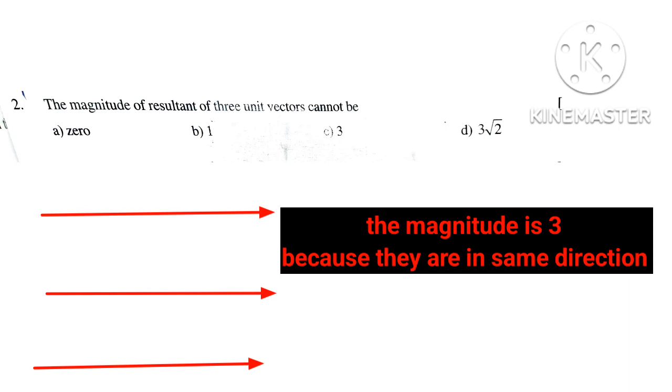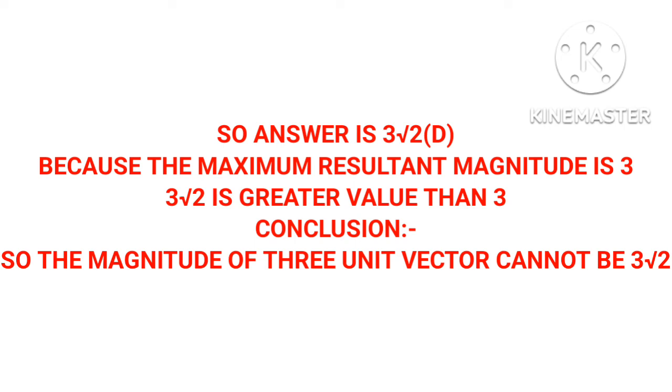So the answer is 3√2 (option D) because the maximum resultant magnitude is 3. Since 3√2 is greater than 3, the magnitude of three unit vectors cannot be 3√2.